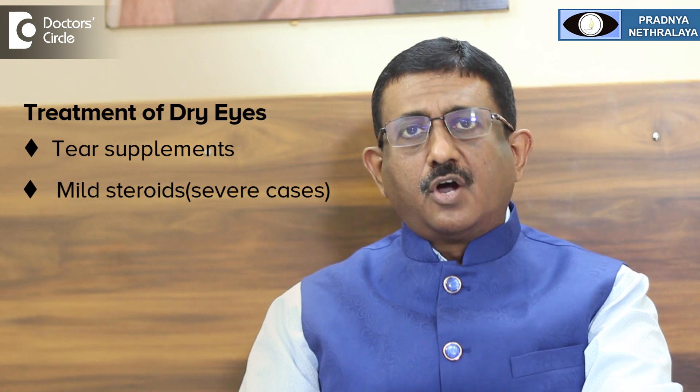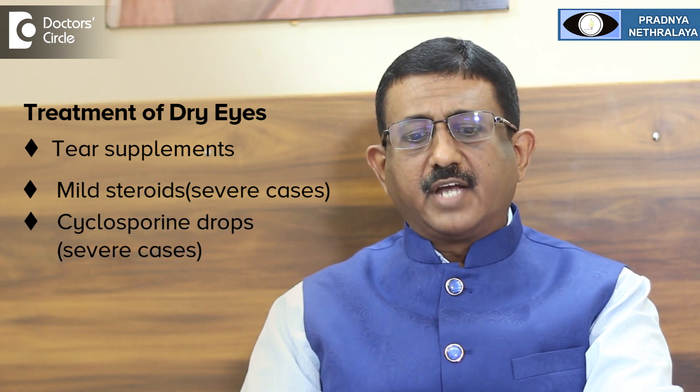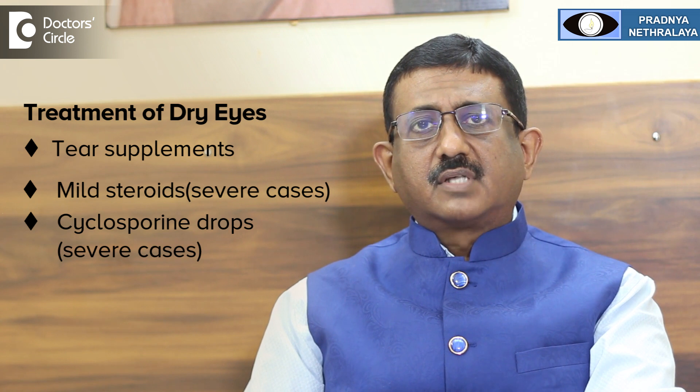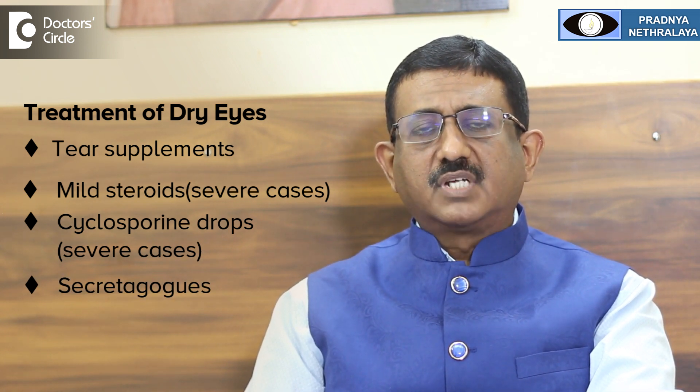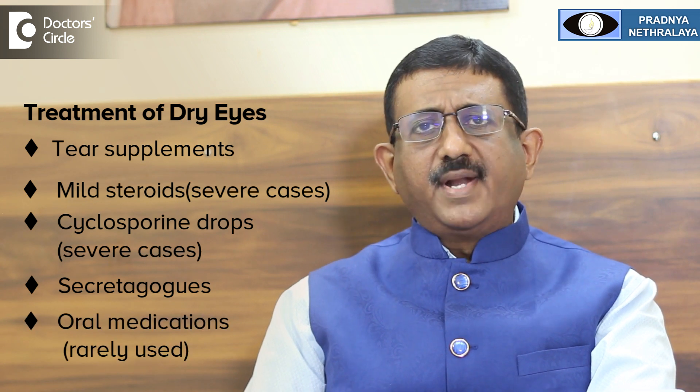In severe cases, one may have to use mild steroids or cyclosporine eye drops. Less secretagogue drugs can sometimes be used in severe dry eye. Oral medications are very rarely used, such as cholinergic agents like pilocarpine 5 milligrams. One should remember that systemic medications can cause side effects, so one needs to be very careful when treating dry eye.